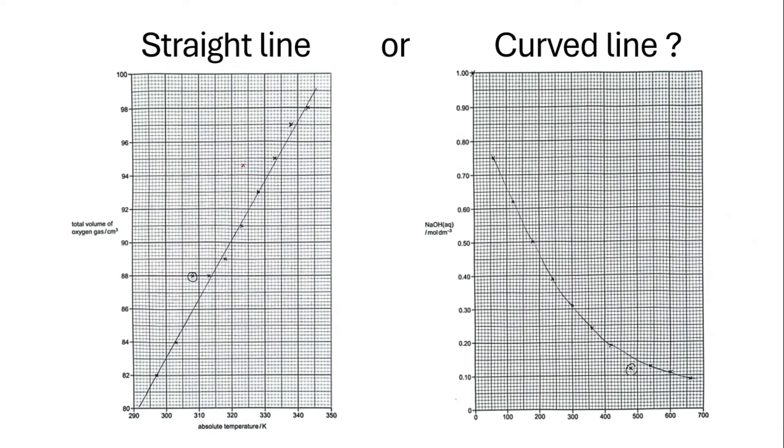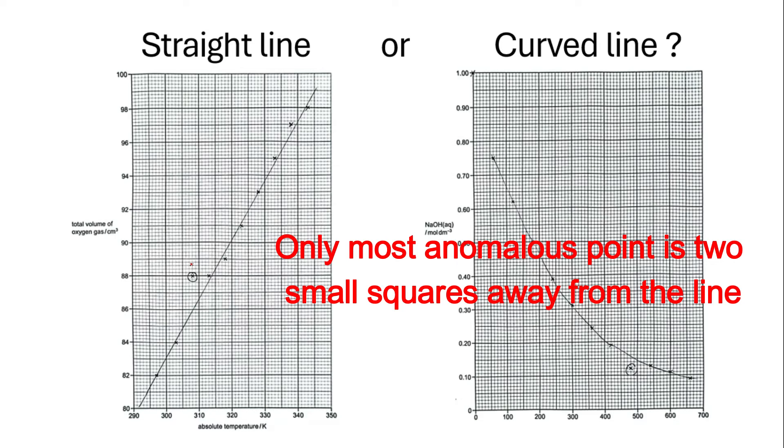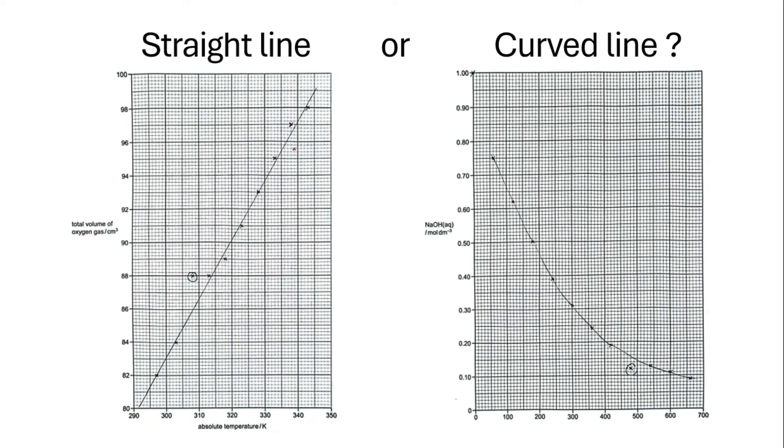Now if you look at the graph on the left-hand side, this straight line graph, there's one most anomalous point which is actually more than two small squares away from the graph. This is what I realized. It will always give you a set of data where most of the points will lie on the straight line of best fit. Some don't exactly lie on the line, but it won't be more than two squares away from your line of best fit.